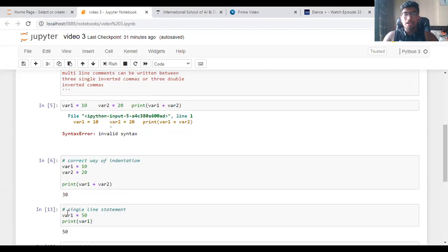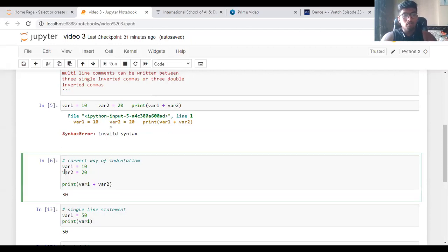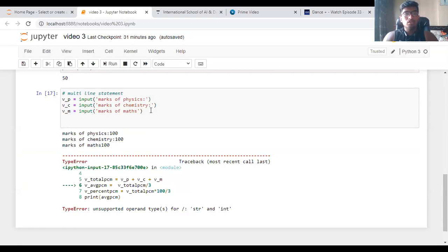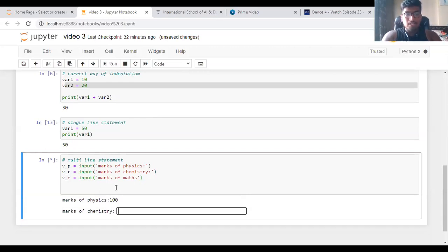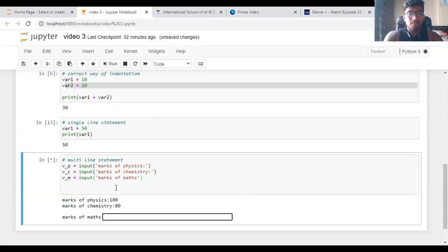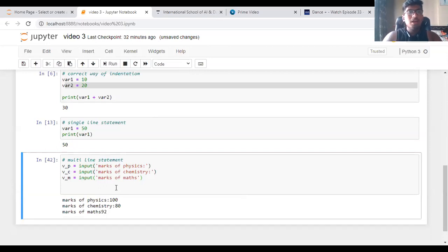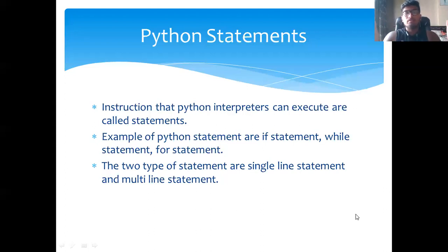Whereas multi-line statements are used to get inputs. See, I have written v_p equals input. Input is a keyword which is used to take input from the user. For example, we have entered marks of physics as 100, marks of chemistry as 80, and math we will take at 92. So here I have written this as a multi-line statement. Now you all know what are the five important pillars of Python.